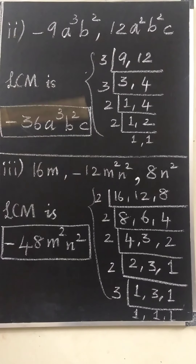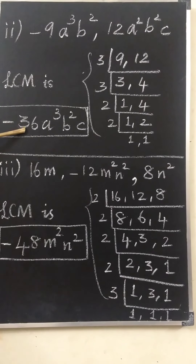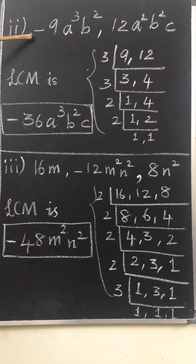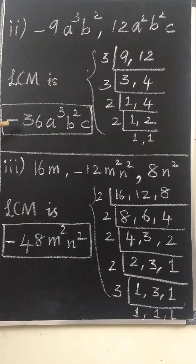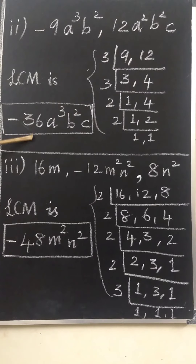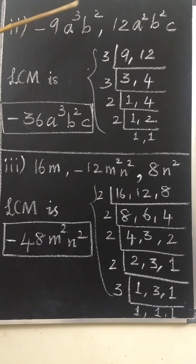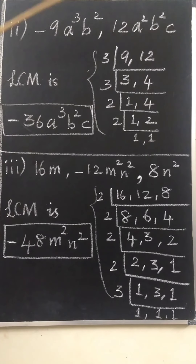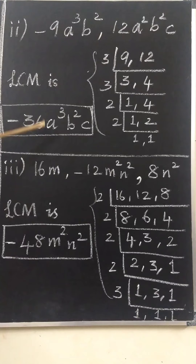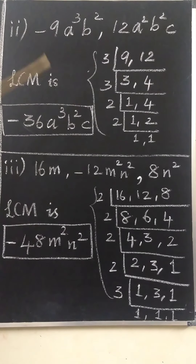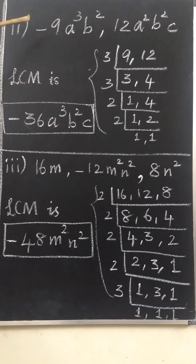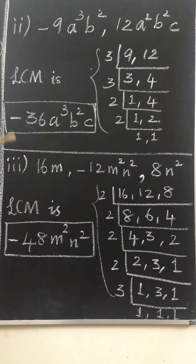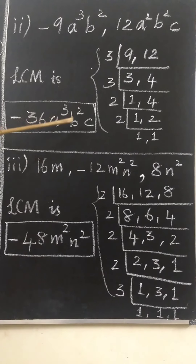That gives us 36. Why have I written minus 36? Because in the question it is given as minus 9, therefore in the answer we have to write minus 36 — that is the LCM of 9 and 12. For a³ and a², a³ should be selected. For b² and b², it is b². C is the uncommon factor; for LCM we have to choose the uncommon factor also. So the LCM of −9a³b² and 12a²b²c is −36a³b²c.